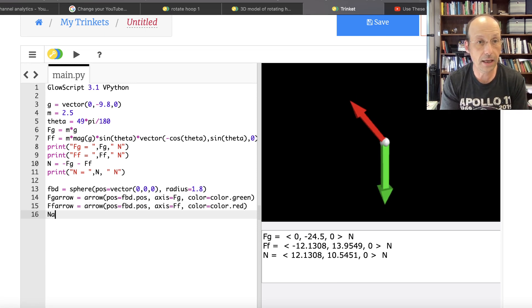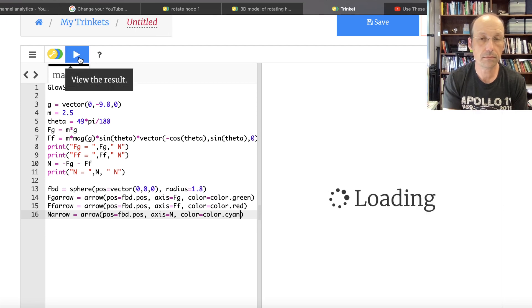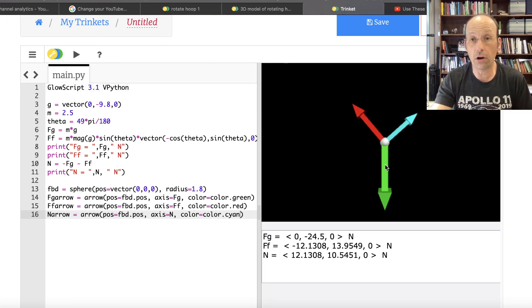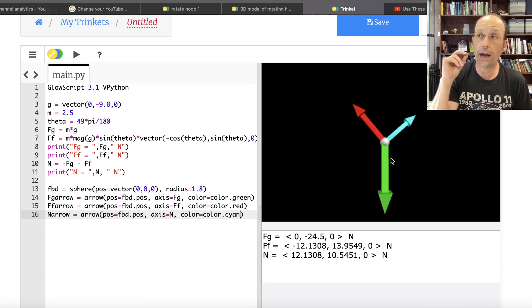And then finally let's say n arrow equals arrow. Position equals FBD dot POS. Axis equals n. Color equals color dot cyan. There you go. And so those forces all add up to zero. Let me show you that they add up to zero. So I'm going to start right here. Go down. And then I'm going to move this arrow to the end of that arrow. And then like that. And then this one to the end of that and show that they make a triangle. That would be fun, don't you think?